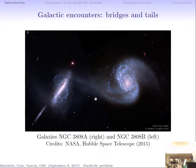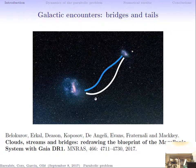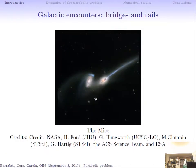Sometimes you cannot see it very well, but recently this year there was a published paper saying that between the two clouds of the Magellanic system, there are two bridges connecting the two clouds. A tail would essentially be a set of particles left behind one of the galaxies.